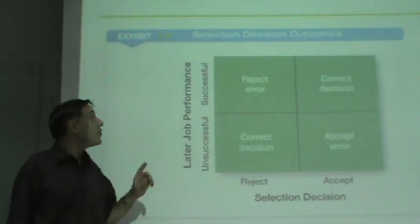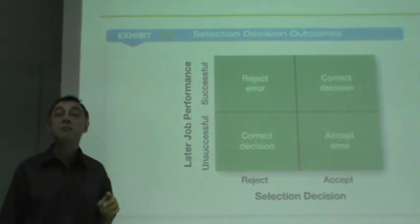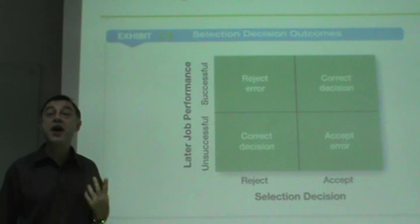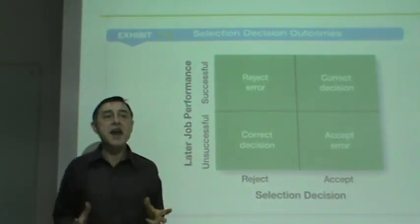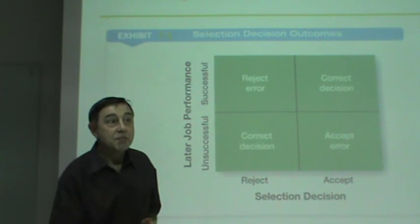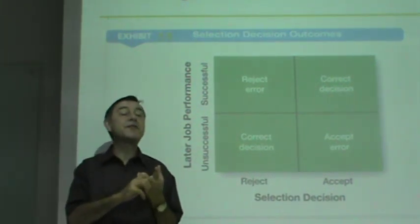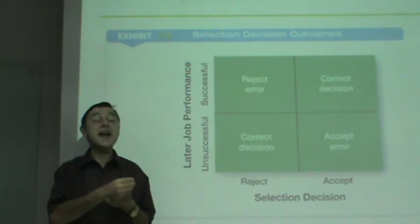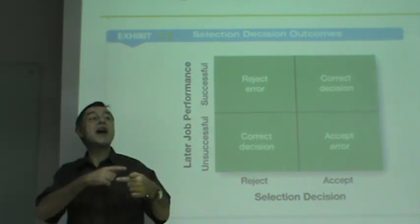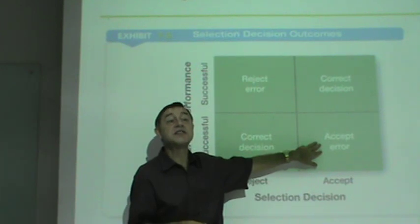The next step is selecting job applicants. In selecting job applicants, you have two major errors you can make: a reject error and an accept error. In the accept error, you take an employee who is not really good but you accept them for the job. That's usually a problem because the employee won't do good work — you still have to train them, get them up to speed, it's costly, and then you have to fire and rehire.